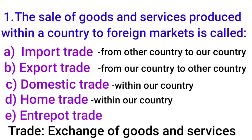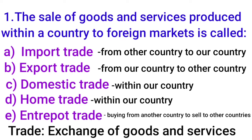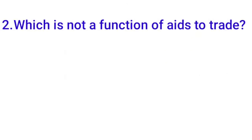Among these options, the question asks about selling goods produced within a country to foreign markets — that is export trade. So the answer is option B: export trade. Second MCQ: 'Which is not a function of aids to trade?' This is an important concept.